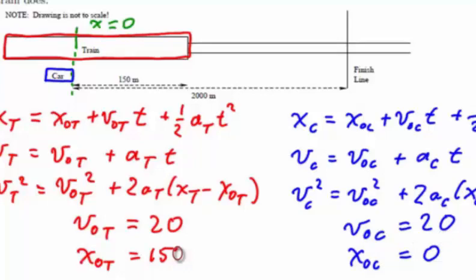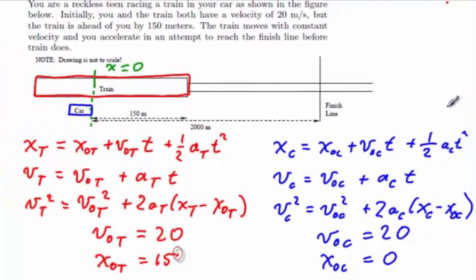Furthermore, since the train has a constant velocity during its motion, its acceleration will be 0. And the acceleration of the car is, of course, one of the things that we'll be solving for.